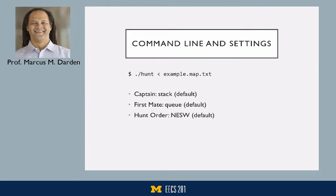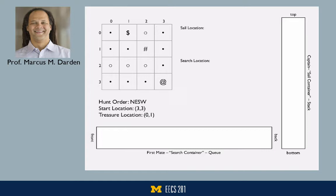The command line we're going to use while running this example is just 'hunt' with example map redirected into it. Without any command line options, the captain will be using a stack, which is default, the first mate will be using a queue, and the hunt order will be north, east, south, west — both of those default as well.